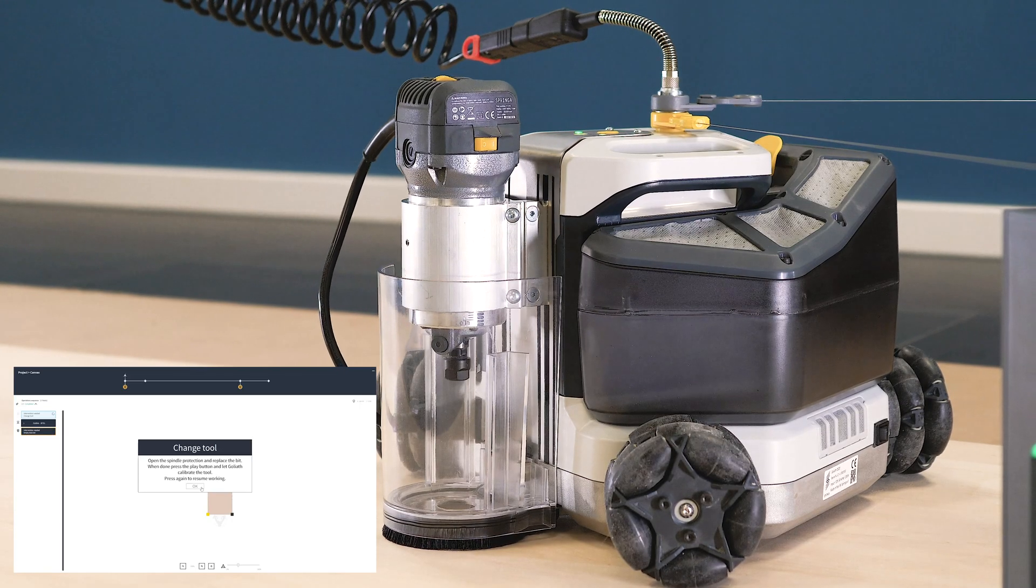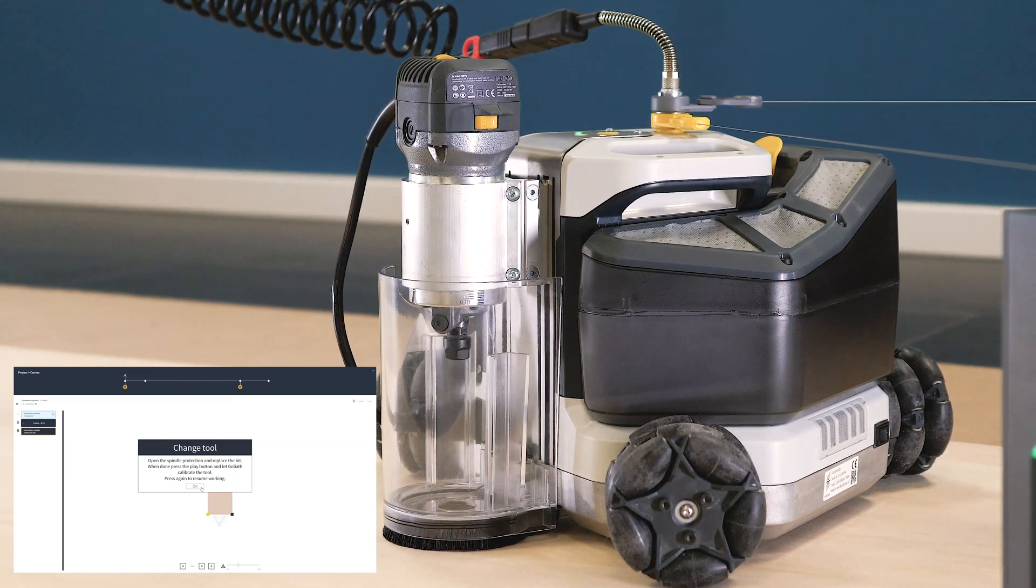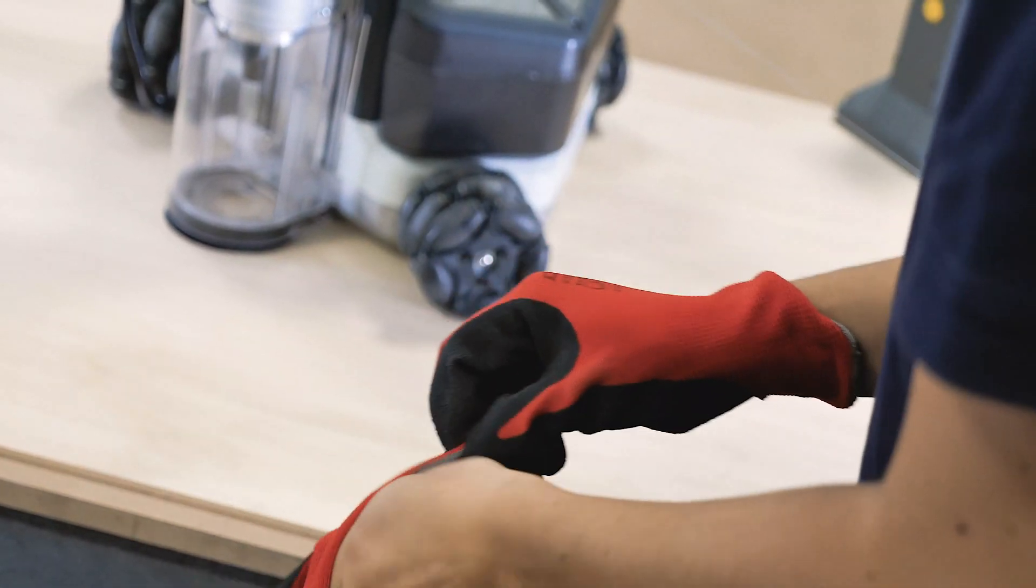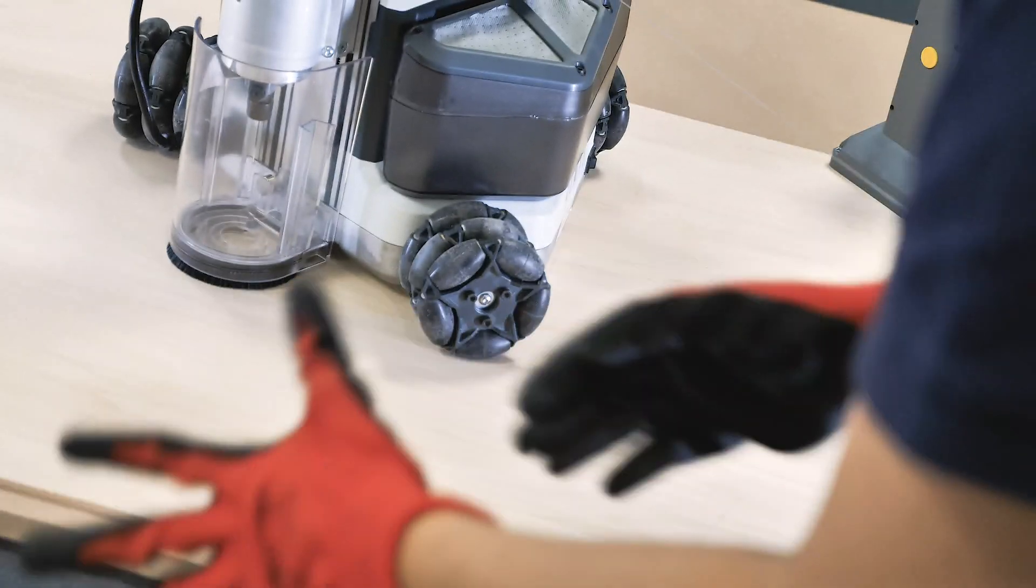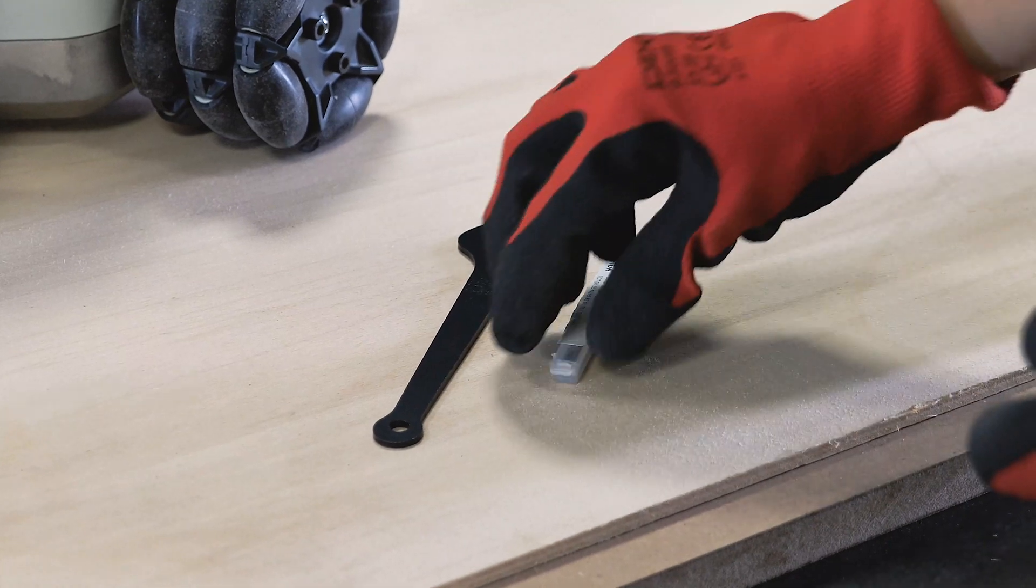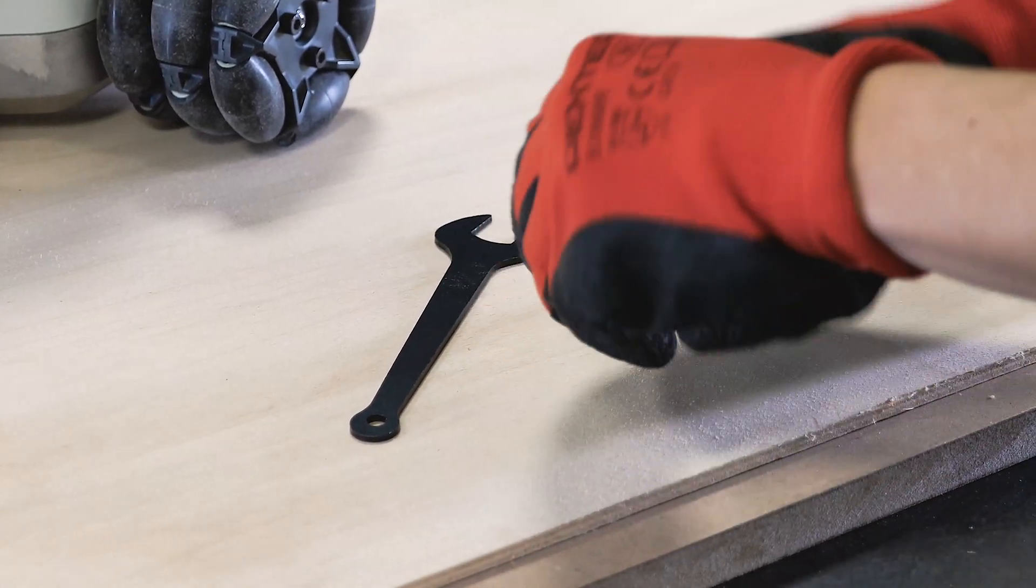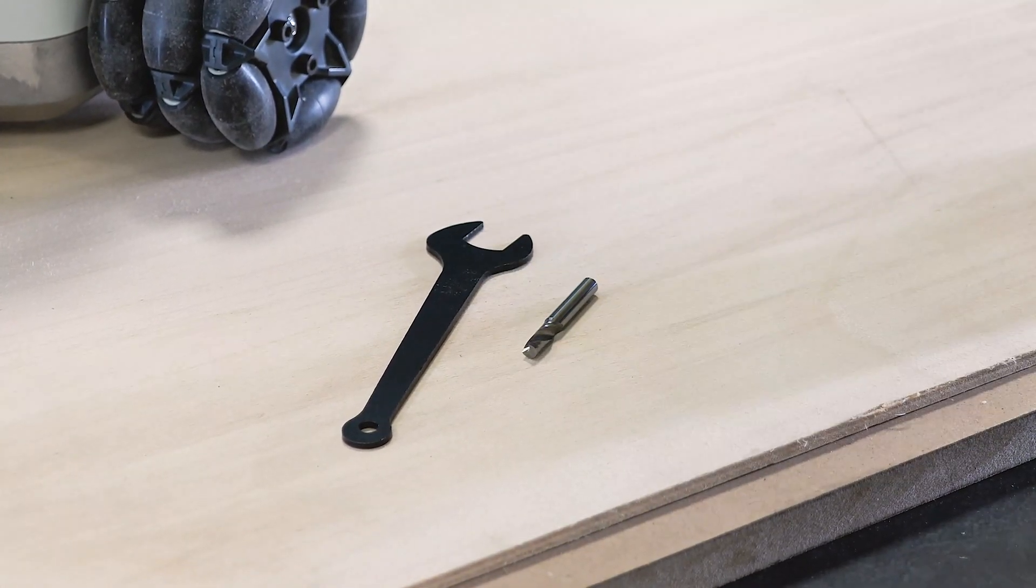Once you are in the production window and the spindle of Goliath is at its maximum height, you can mount the bit you already set when you chose the cutting parameters at the beginning of your project. The first thing to do is wear a pair of safety gloves, then prepare the wrench and the bit.